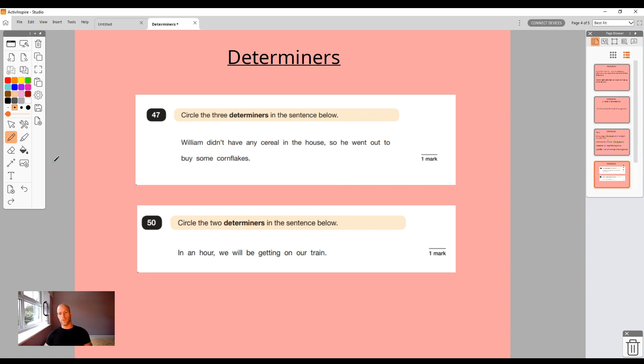To move on to SATS questions, it doesn't take up too many marks in a GPS grammar punctuation spelling test, but they're easy marks to get if we can remember that. When we come across a question, a SATS question, we can have a look at what we've been asked to do. Circle the three determiners in the sentence below. The way I'd approach it is I'd quickly look at the sentence. I would highlight to myself where the nouns are. I've got cereal is a noun, house is a noun because it's a person, place or thing, and cornflakes.